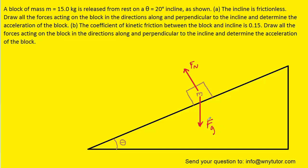We're going to have to take the gravitational force and break it into components, because we need our forces directed along and perpendicular to the incline, but right now this gravitational force is neither along nor perpendicular to the incline. So we'll draw the components of the gravitational force in the appropriate manner. One component points perpendicular to the incline, and there is another component that's parallel to the incline, directed down the incline.